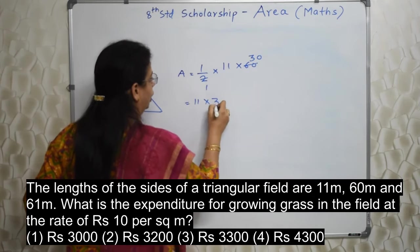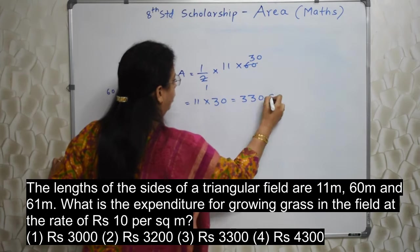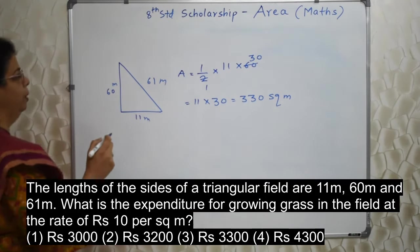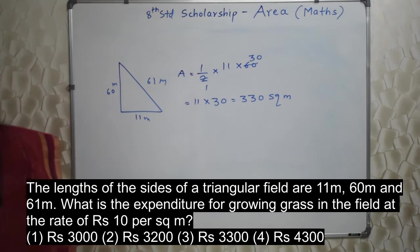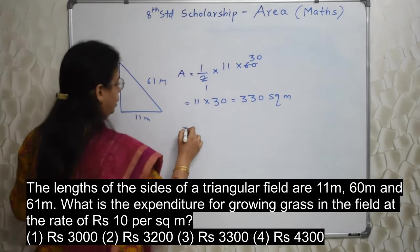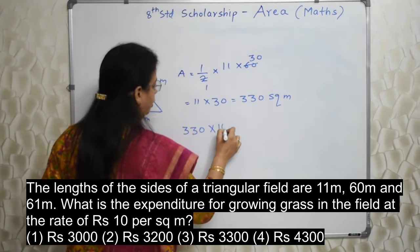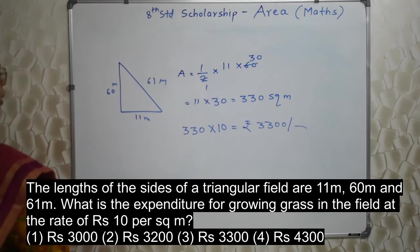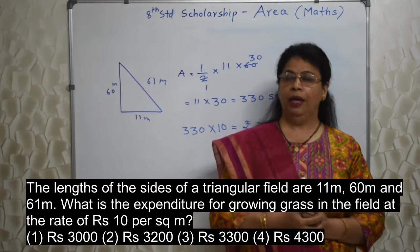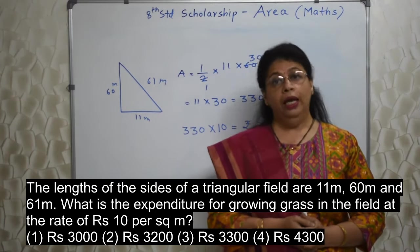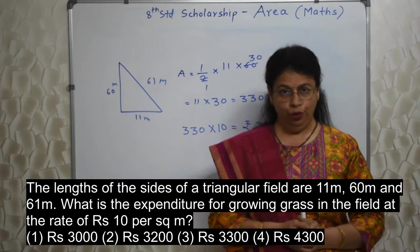330 square meters will be the area because everything is in meters. And the cost or the rate is 10 per meter square. So this is the area. Area into rate. So total cost will be 3300. In case you don't realize they are Pythagorean triplets, then if the sides of a triangle are given, you can use Hero's formula. I will share that method also with you. Let's go ahead.